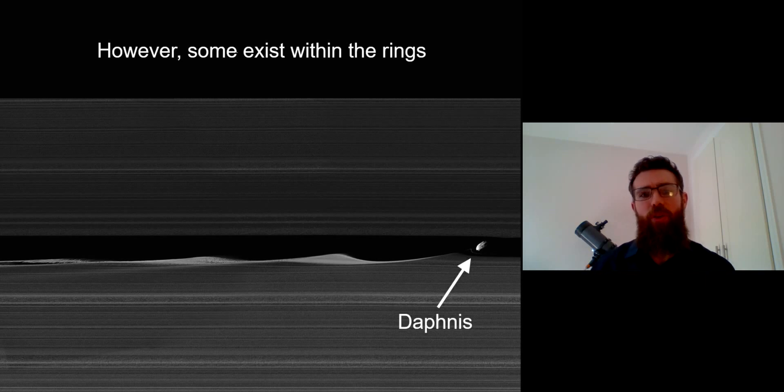Daphnis is a moon orbiting inside the ring, and you can see it there to the right inside this very small gap. The moon is actually creating that gap as it orbits around, and that gap is related to how big it is. This is a nice close-up image taken by Cassini—you can see the wave structure on the edge of the ring that the moon is gravitationally causing as it orbits.